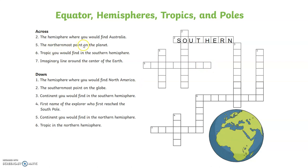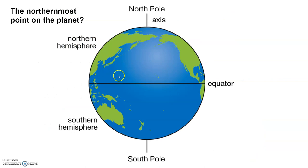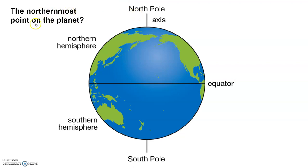Number five across: the northernmost point on the planet. Let's look at the map. We have the equator, this imaginary line, and when it says the northernmost, that means the furthest it can go north until it has to stop. All the way to the top here is the north pole, so the northernmost point on the planet would be the north pole.